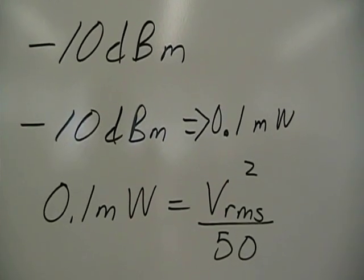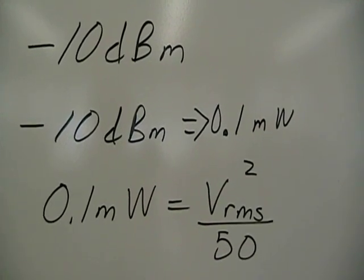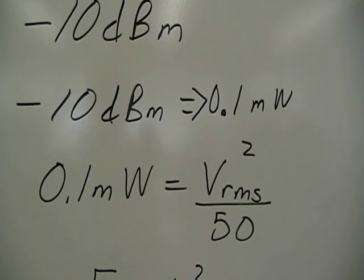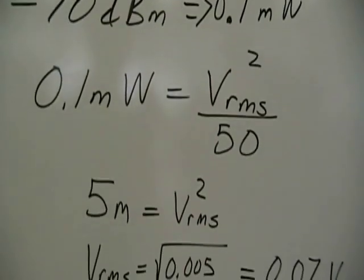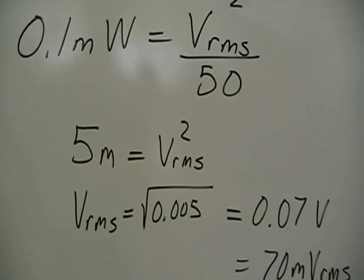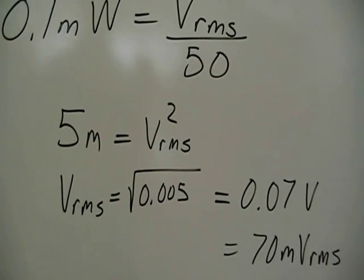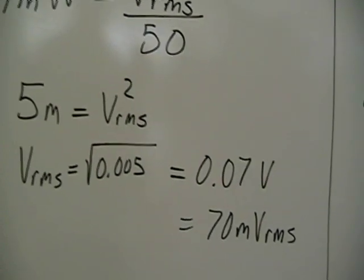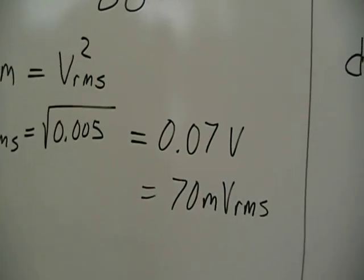0.1 milliwatts is equal to Vrms squared over 50. 50 ohms is the spectrum analyzer impedance. That becomes 5 milliwatts equals Vrms squared. Square root of 5 milli is 0.07, so 70 millivolts rms.